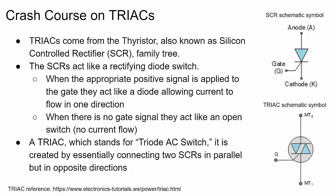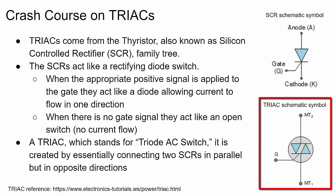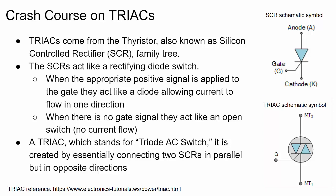A triac is an acronym that stands for triode AC switch. Looking at the schematic symbol, it's essentially two SCRs in parallel with the diodes facing different directions. That way, if properly biased, you can get current flowing in both directions. Like the SCR it has a gate and three pins, but notice it doesn't label them anode and cathode because the diodes face opposite directions. There's a great website, Electronics Tutorials, linked in the video description if you want to learn more.